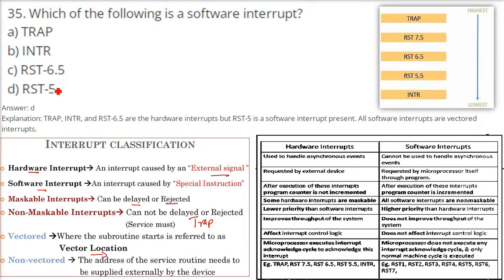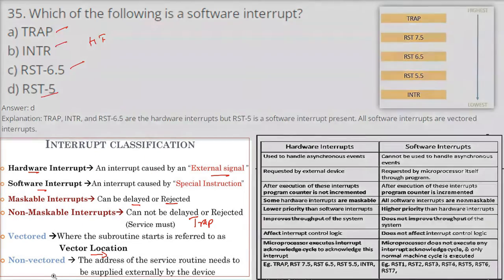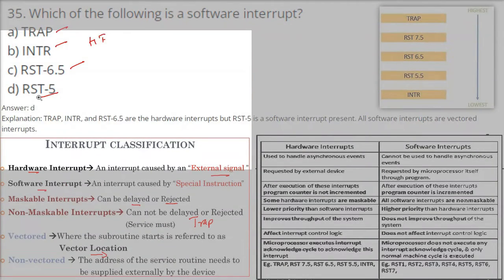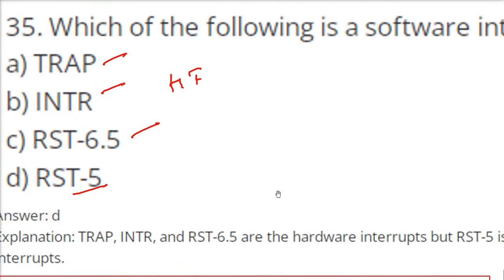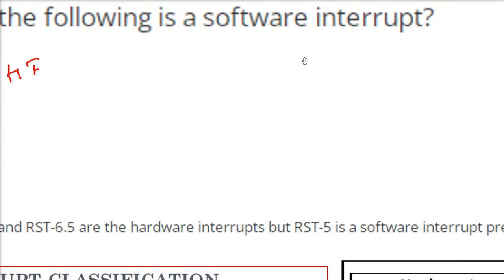The answer here is RST5, because there is a difference between software and hardware interrupts. 5.5, 6.5 — these are all hardware interrupts. Software interrupts are RST5, RST6, RST7, and so on. Trap and INTR and RST6.5 are hardware interrupts, but RST5 is a software interrupt.